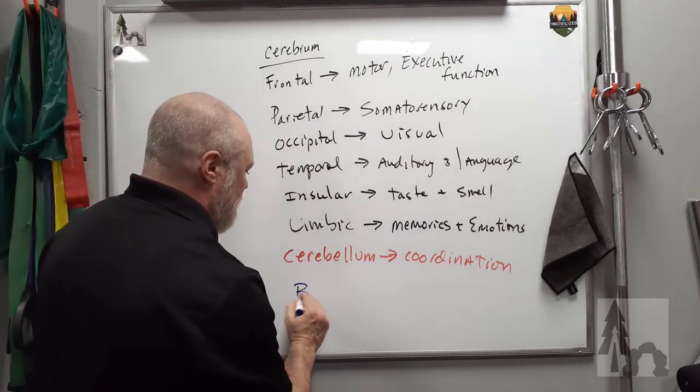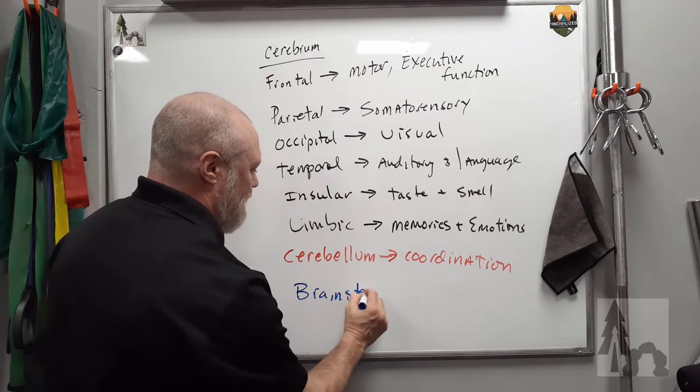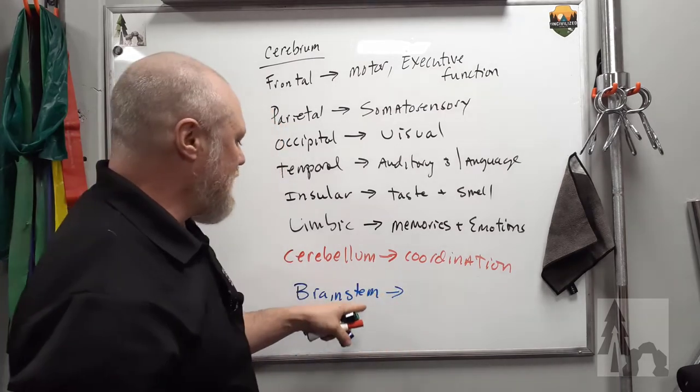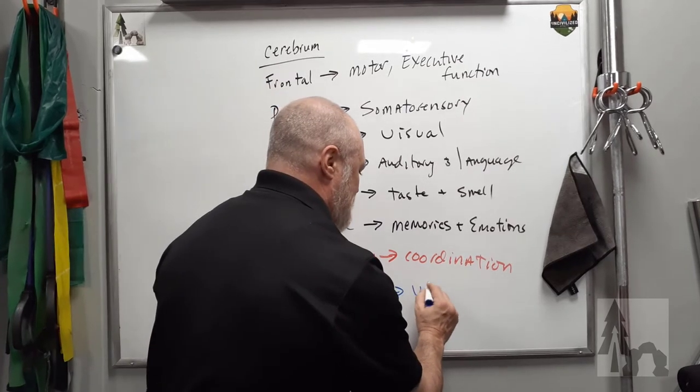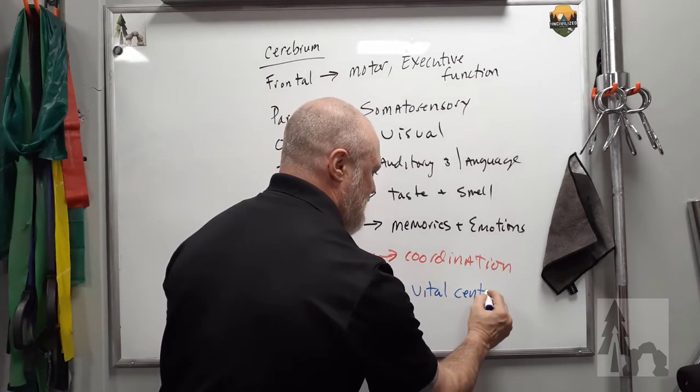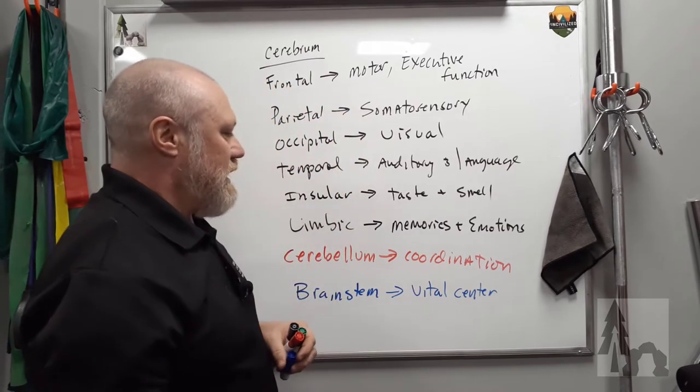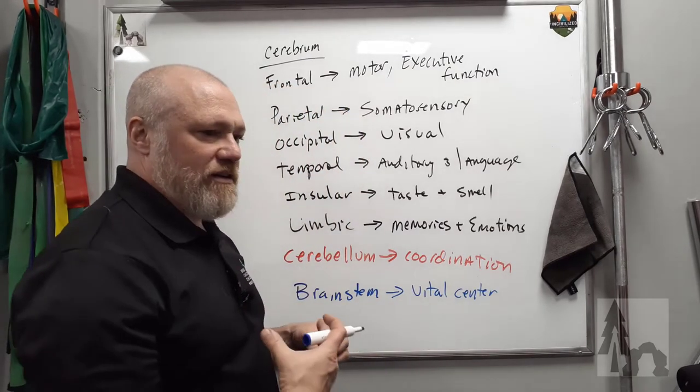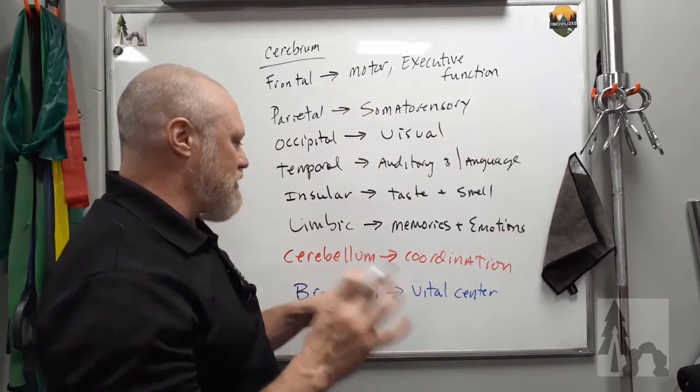Brainstem. Remember the three parts of the brainstem are the midbrain, the pons and the medulla oblongata. Think of your brainstem as the home of your vital centers, respiratory center, cardiac center, digestive enzymes and things that are kind of controlled.